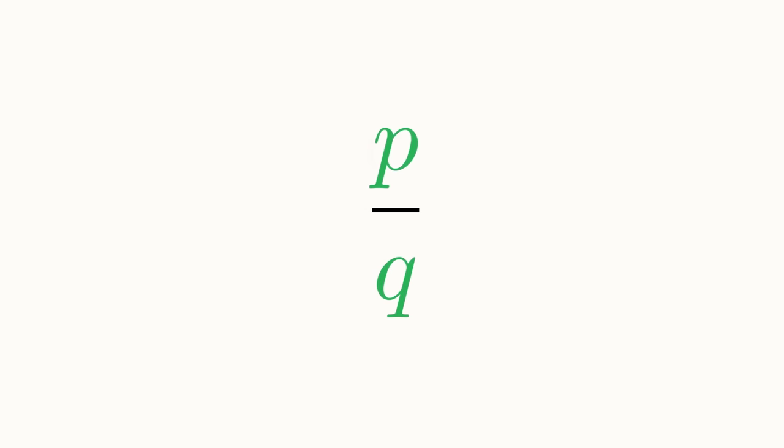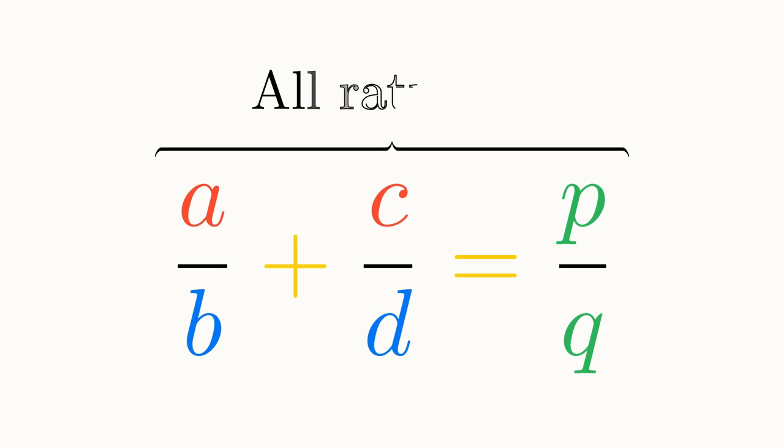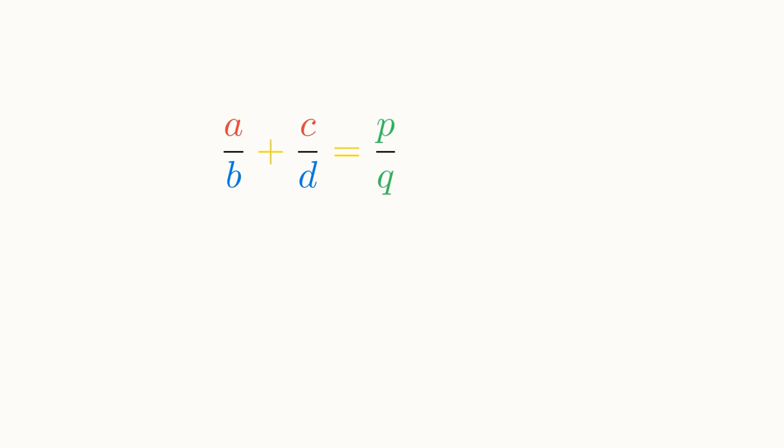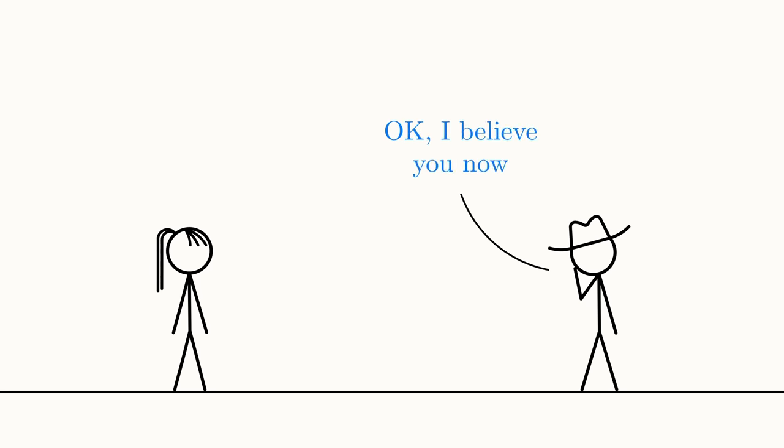So after all this abstraction, we are left with the fact that some rational number plus another rational number is equal to P over Q, where P and Q are some integers. This result is definitely rational, then. So our claim that the sum of any two rational numbers is also rational is true, and proven, no less, through the power of abstraction.